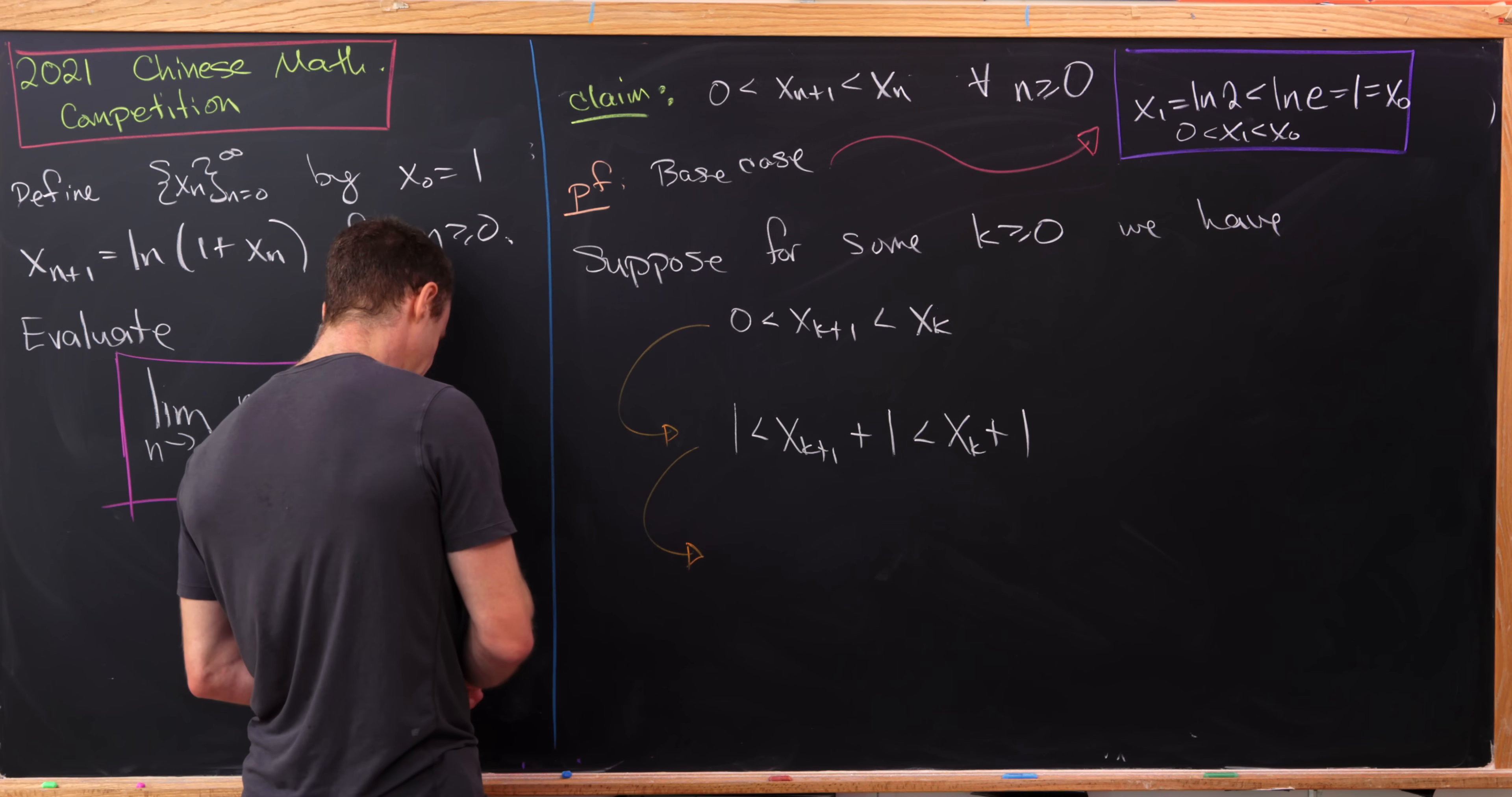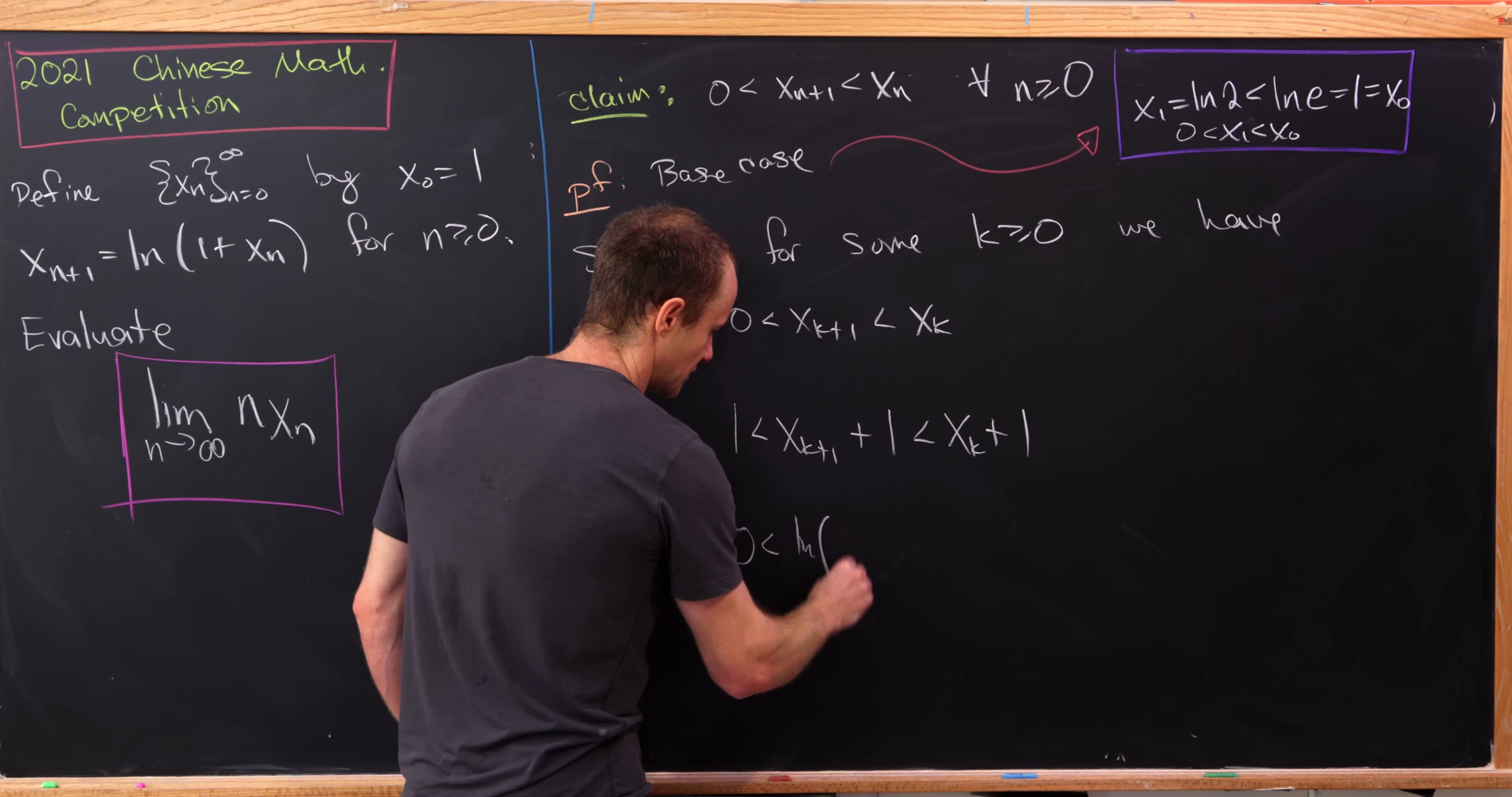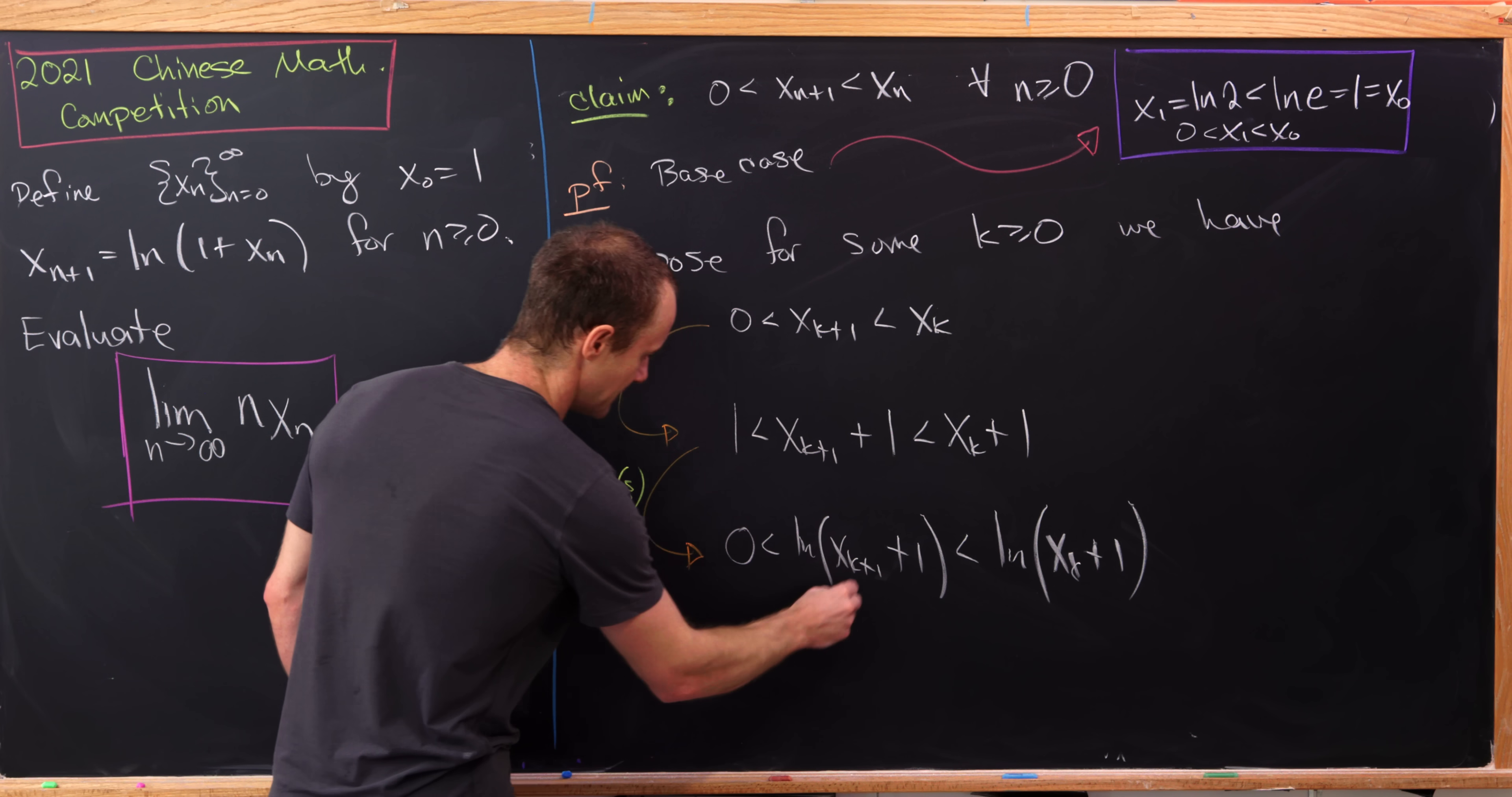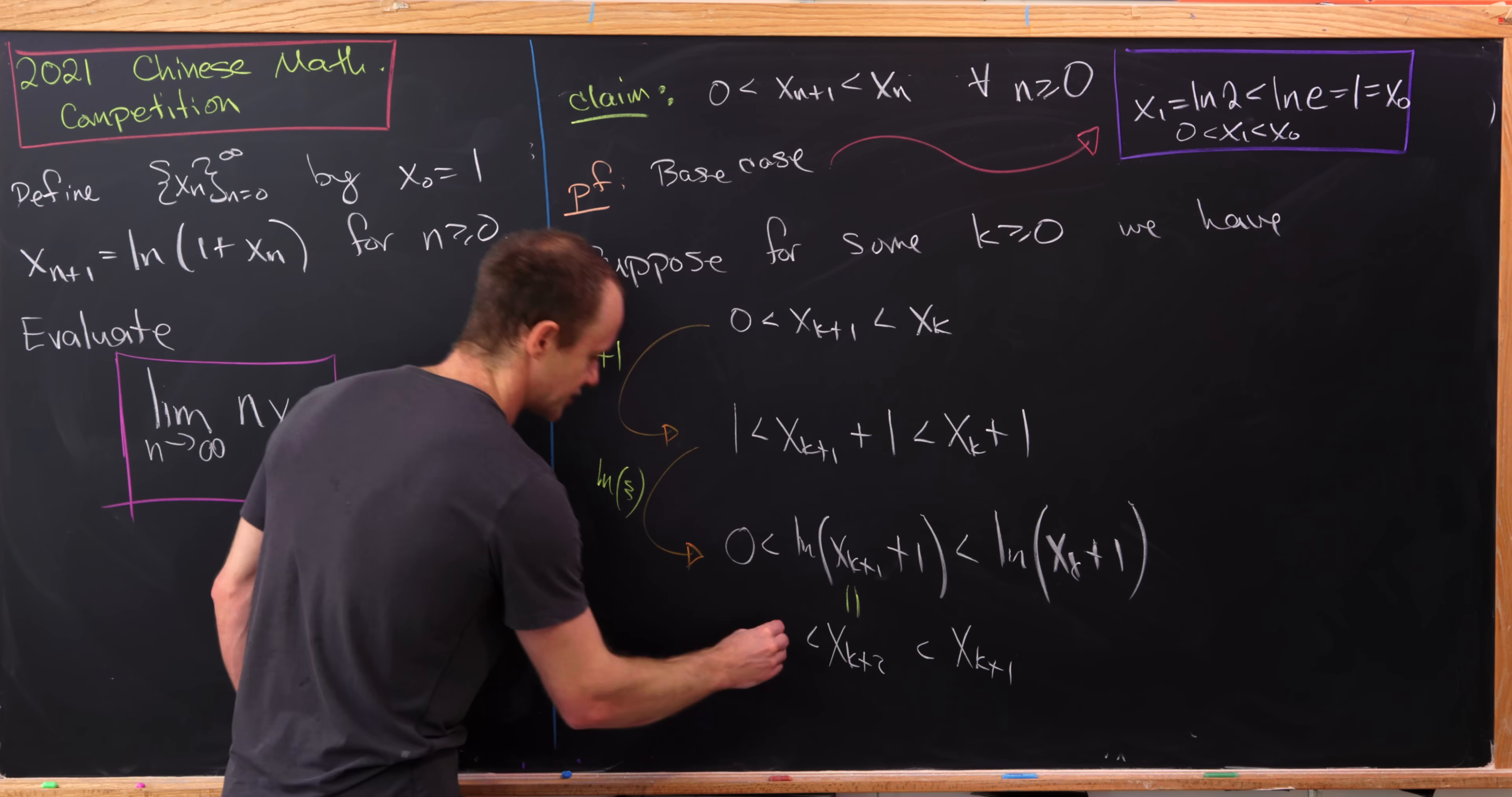And now we're going to take the natural log. So here we're adding 1, here we're doing the natural log of all of that. We'll have the natural log of 1 is 0, and then here we'll have the natural log of x_{k+1} plus 1, and then the natural log of x_k plus 1. But everything is immediately done because this natural log of x_{k+1} plus 1 is simply x_{k+2}, and then this term is simply x_{k+1} by the definitions of our sequences.